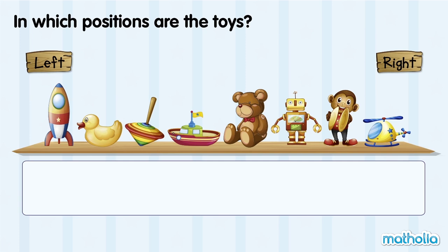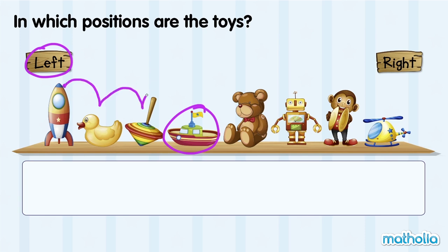From the left, in which position is the boat? The boat is here. From the left, the boat is first, second, third, fourth. The boat is fourth from the left.